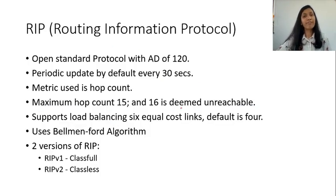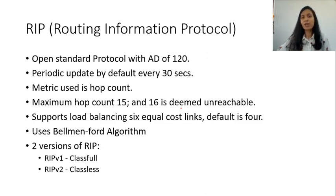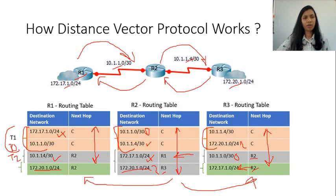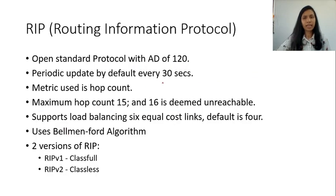Let us move on to Routing Information Protocol and look at a few features of RIP. RIP is an open standard protocol and has an administrative distance of 120. Administrative distance states the reliability of that route. In case of RIP, the periodic update by default is every 30 seconds. The metric used by RIP is hop count — in order to calculate distance, RIP uses hop count as its metric.